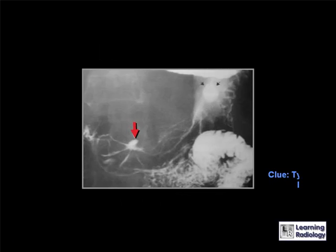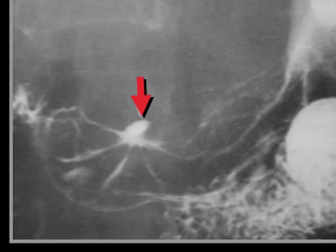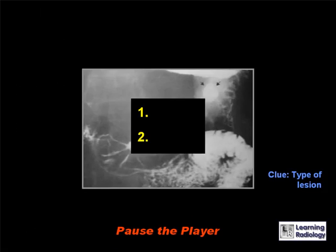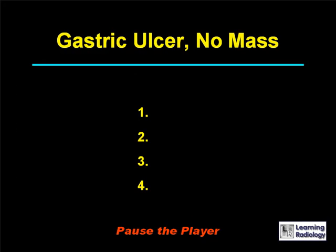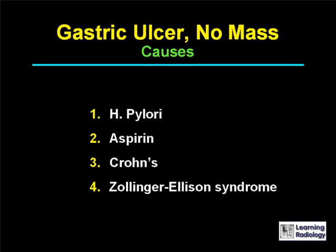The next differential diagnosis is for a gastric ulcer without mass. There are four causes: H. pylori, aspirin-induced, Crohn's disease, and Zollinger-Ellison syndrome.